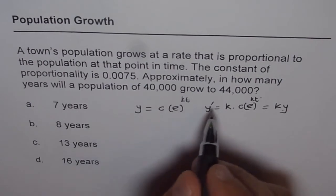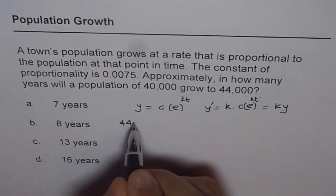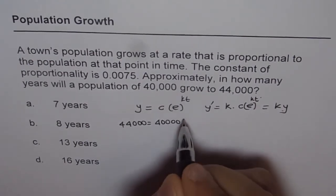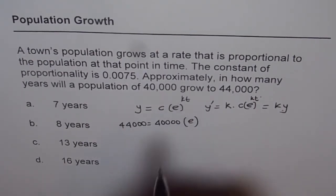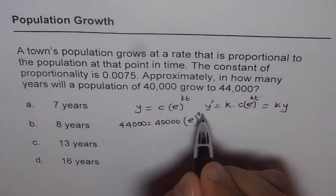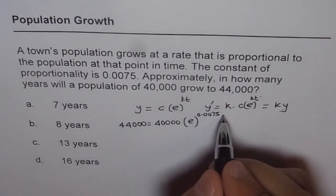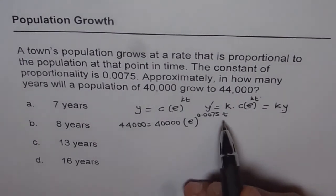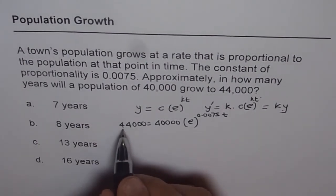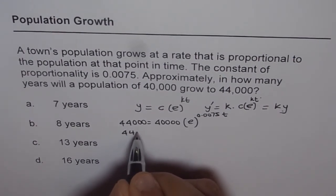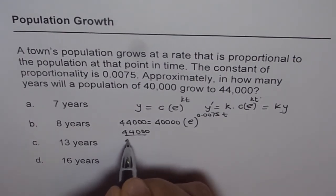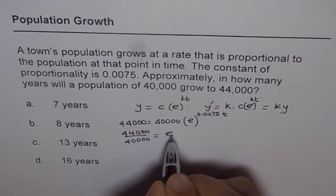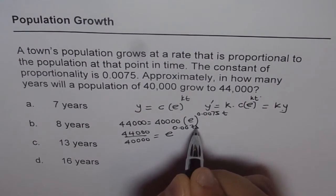So y is 44,000. 44,000 equals to 40,000 times e to the power of 0.0075 t. That is the equation. Now to find the value of t, we can just divide this by, so what we get is 44,000 divided by 40,000 equals to e to the power of 0.0075 t.